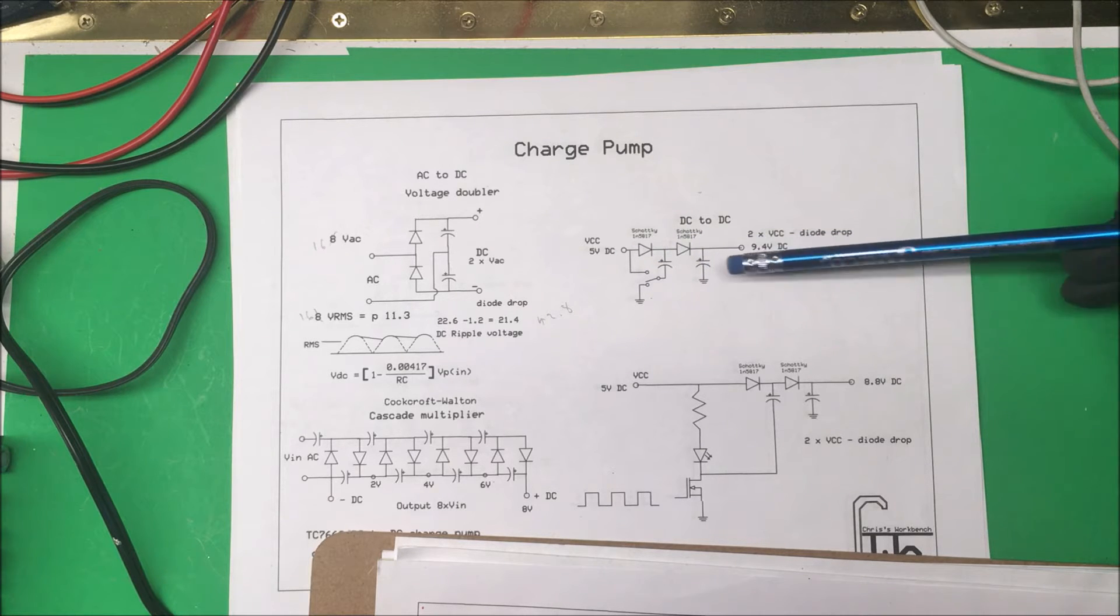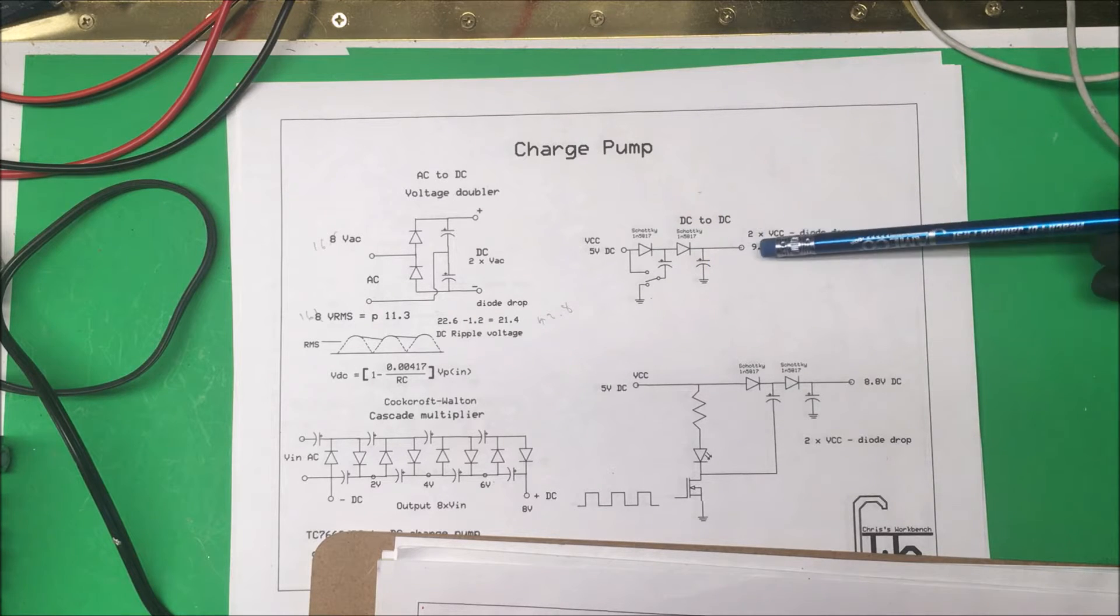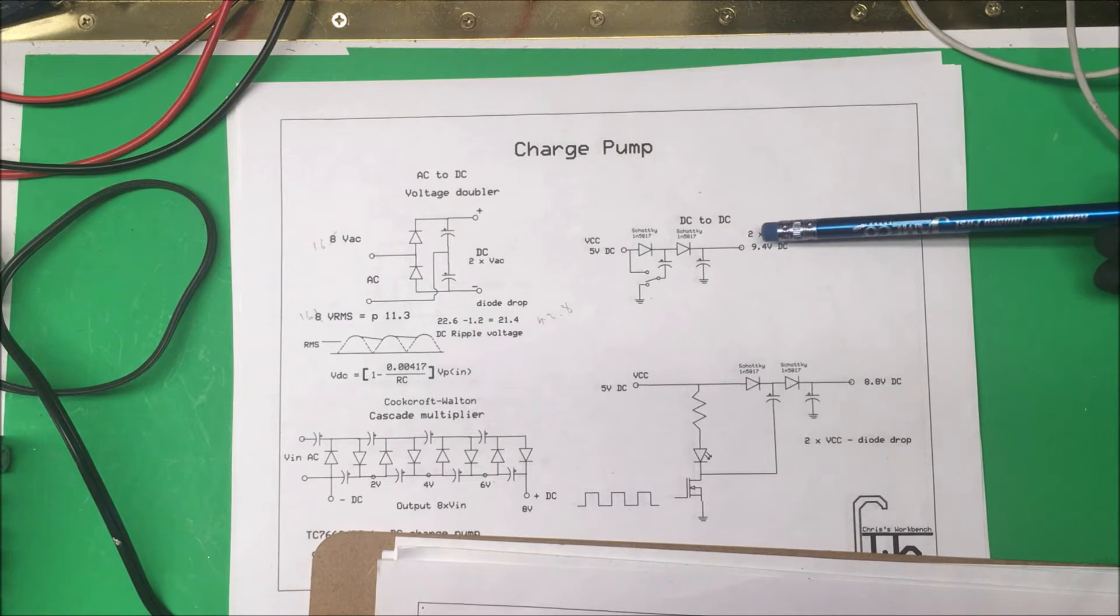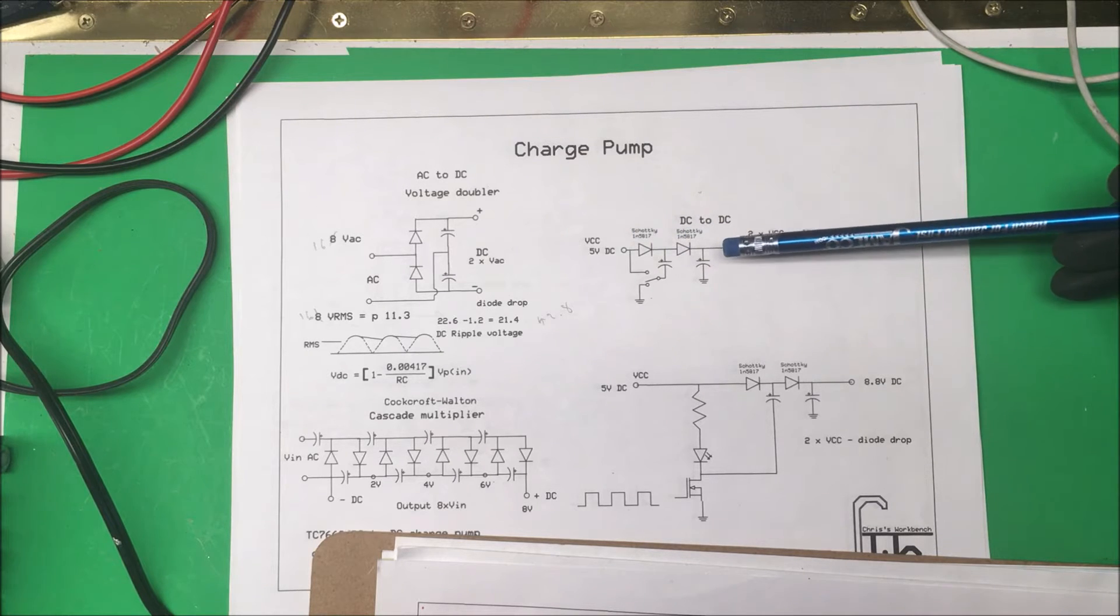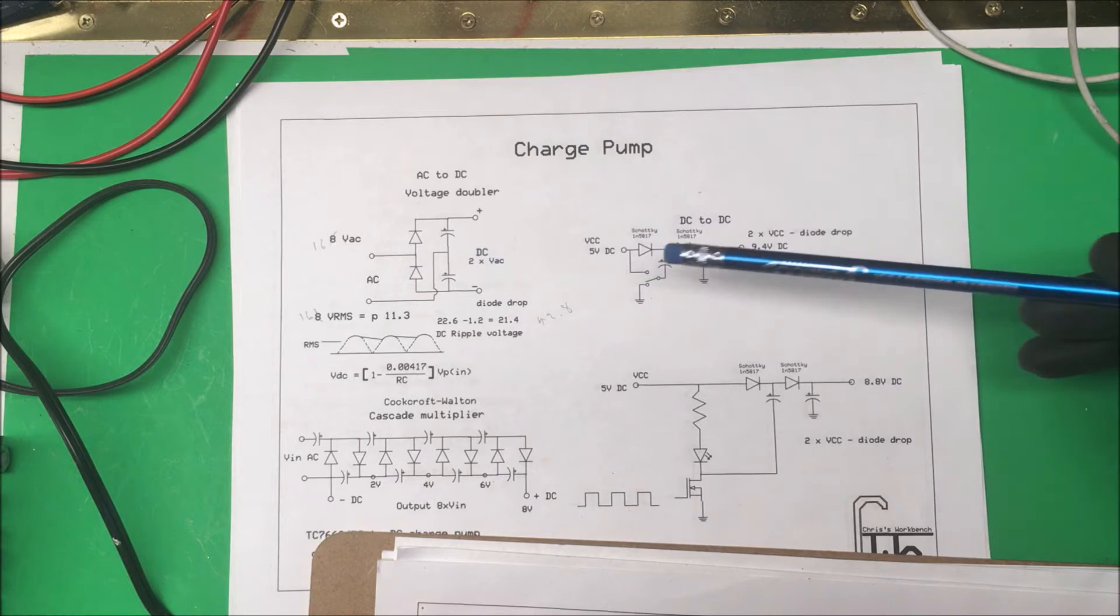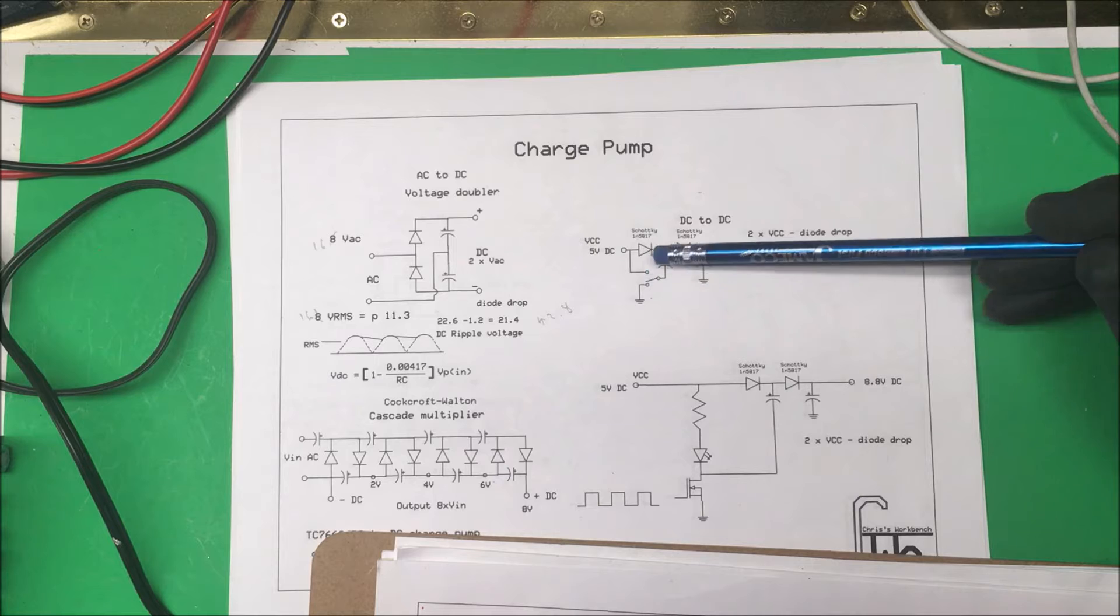Now what we have, it'll be about 9.4 volts because of the drops of the diodes. These happen to be Schottky diodes here, and these were regular diodes over here. And then you don't want to sit there and switch this switch all day long.